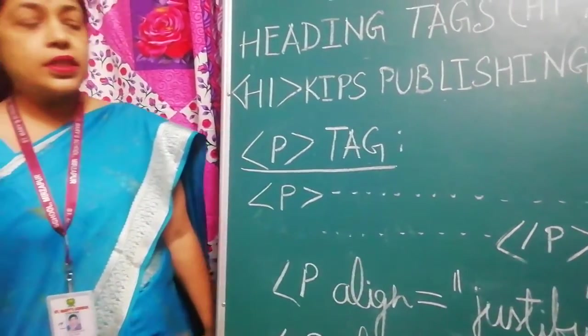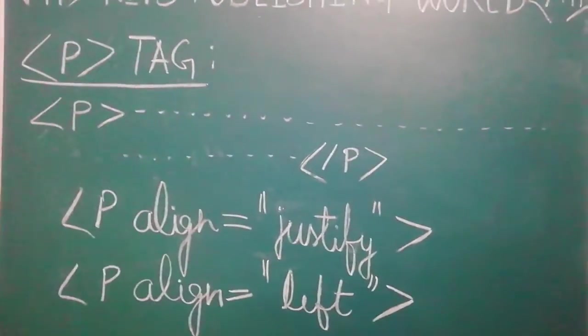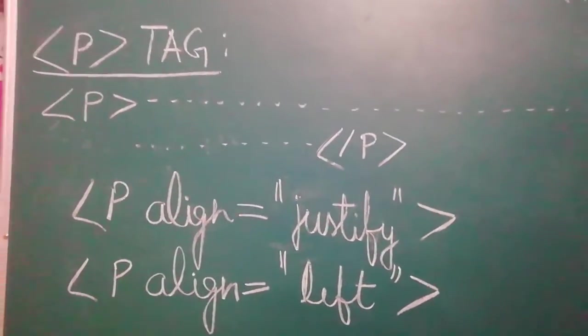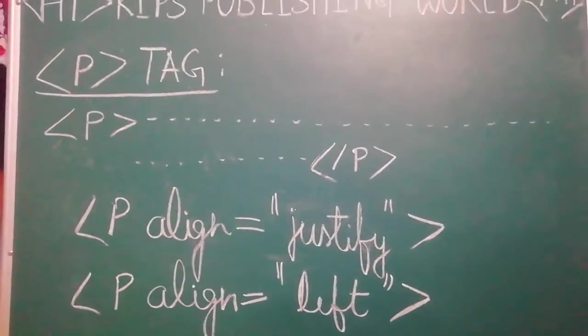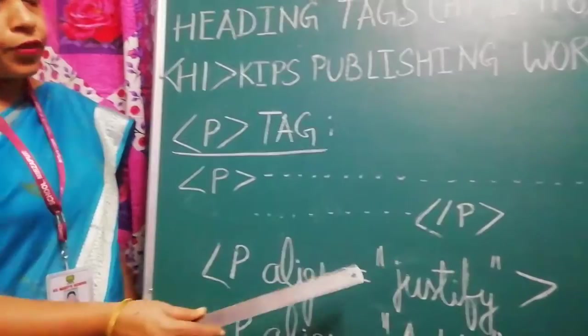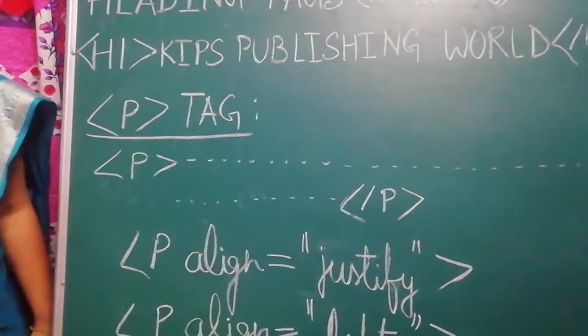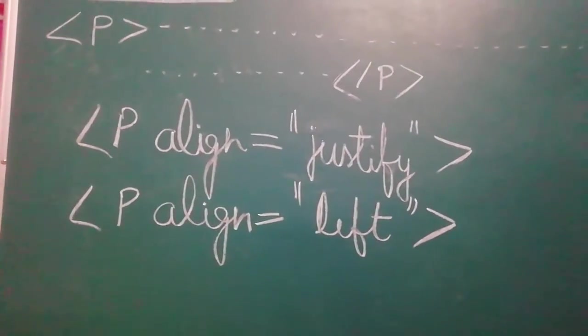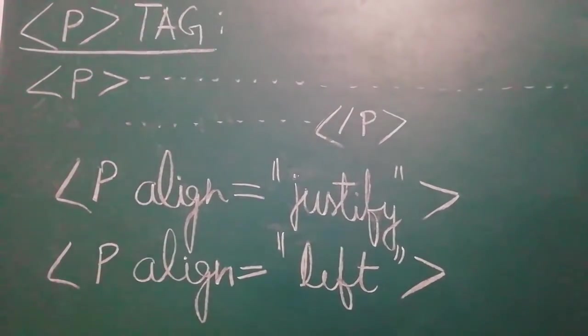Now the next tag is the Paragraph Tag. Paragraph Tag is used to mark the beginning of a paragraph. The P tag will indicate the beginning of the paragraph, whereas the closing P tag will indicate the end of the paragraph. When we start another paragraph, the web browser will leave one line between the two paragraphs.